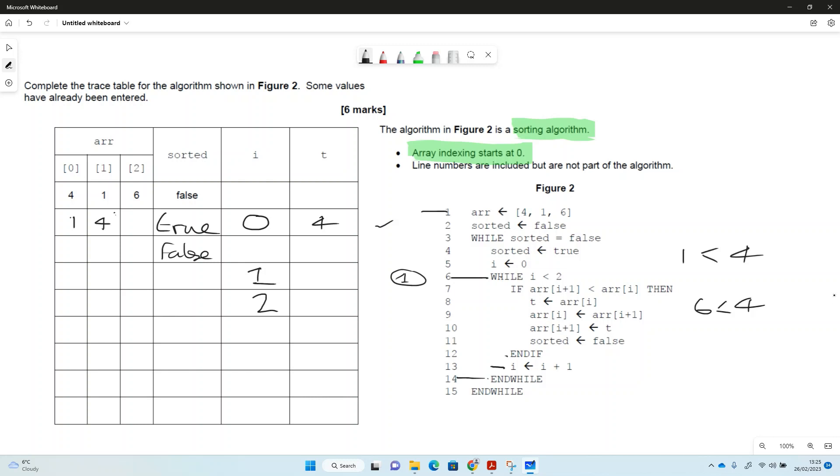And i will become 2. While i less than 2, well it's not less than 2, so we end the other while. While sorted equals false, it is still false. We make sorted equal to true. i gets 0 again. While i less than 2, it is. So if array[i+1], which is, so that means we're now here, i+1, so if 4...